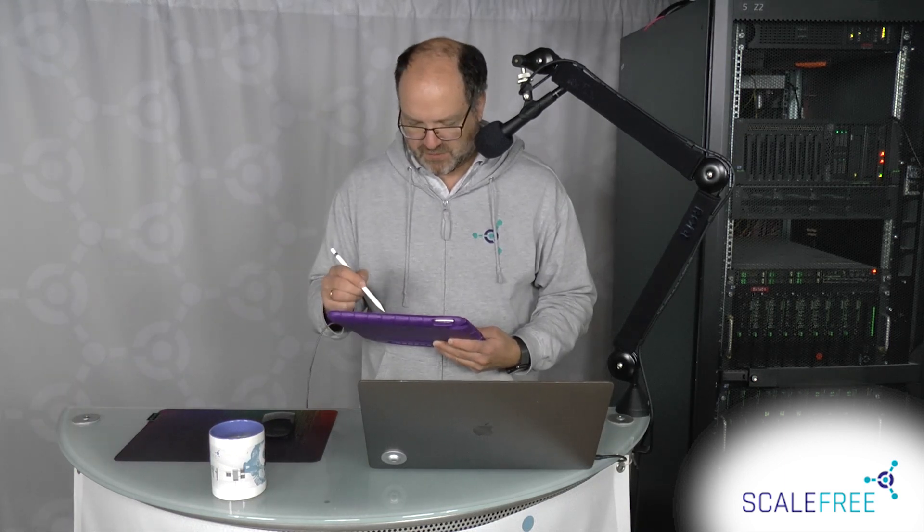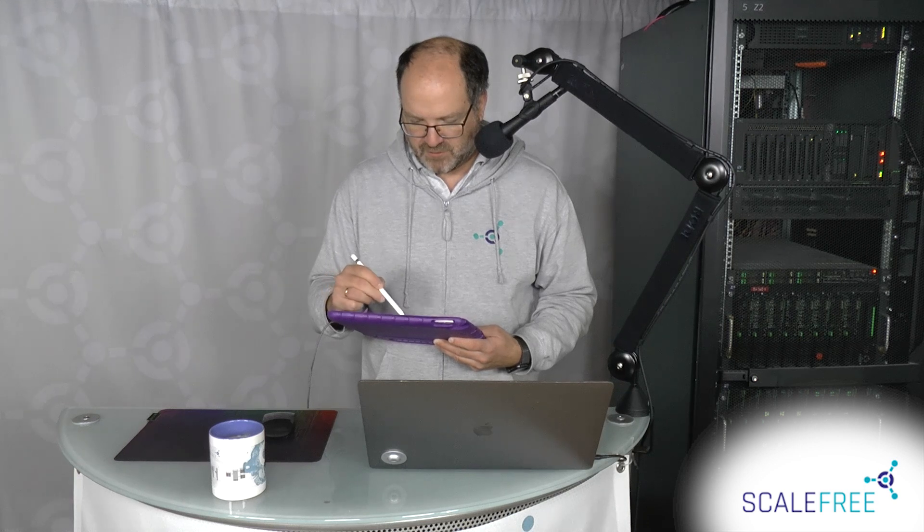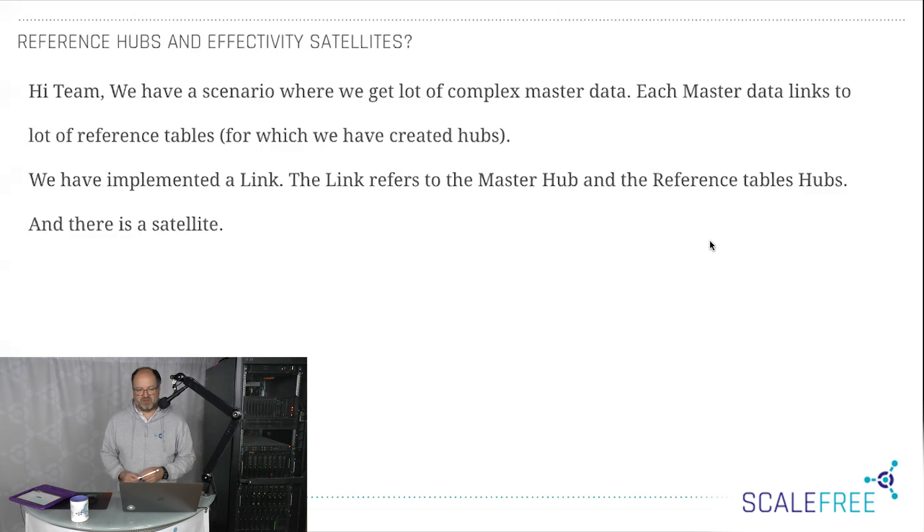This is about reference hubs and effectivity satellites. What they have is essentially master data—customers, products, and so on—and they have references to reference tables. So let's say you have a product with a list price, and the list price is in a currency. The currency is an ISO three code, so you want to refer to another table to get the descriptions for these ISO codes—EUR, USD codes, and so on. And they decided to create hubs for that. I want to discuss what are the options for how to model reference data. That's also important to understand how we link it to your actual raw data model.